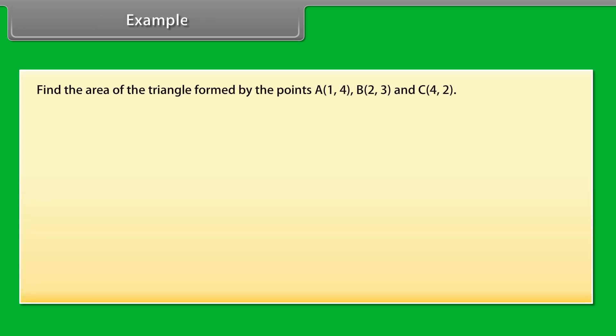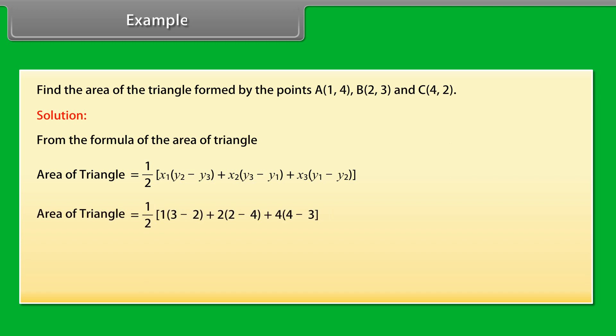Example: Find the area of the triangle formed by the points. Area of triangle is equal to 1 by 2 into x1 into y2 minus y3 plus x2 into y3 minus y1 plus x3 into y1 minus y2. Area of triangle is equal to 1 upon 2 square units.